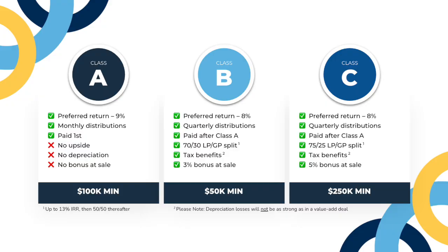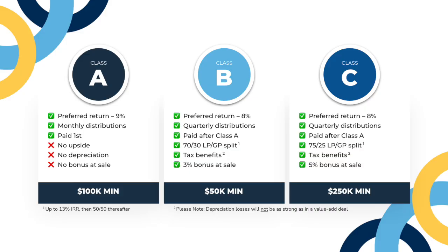Class A is our preferred return class, meaning it has a 9% PREF return. It also has monthly distributions. Class B and C both have an 8% preferred return and have quarterly distributions. Class A, in order to be at the top of the pyramid, is sacrificing the profit-sharing at the end. So Class A is strictly preferred return — 9% return, that's what you can expect.